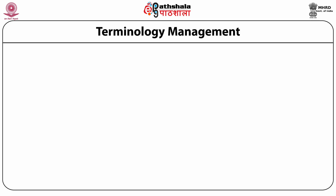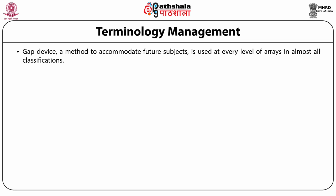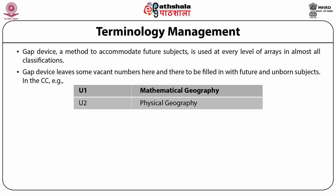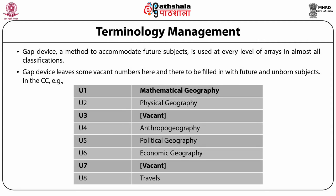There are many traditional as well as innovative methods for hospitality. The gap device is one traditional and simple method. Gap device is the method to accommodate future subjects and is used at every level of arrays in almost all classifications. Gap device means leaving some vacant numbers here and there to be filled with future and unborn subjects. Take the example of CC: in the main class U Geography, there are some vacant places — U1 is filled, U2 is filled, but U3 is vacant, and U7 is also vacant. These are big gaps, meaning that if new branches of geography emerge in future, the classificationist can accommodate them at these gaps. This is a very traditional, simple method.